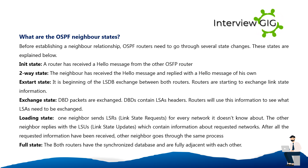In the Exchange state, DBD packets are exchanged. DBDs contain LSA headers, and routers use this information to determine which LSAs need to be exchanged. In the Loading state, one neighbor sends LSRs (Link State Requests) for every network it doesn't know about, and the other neighbor replies with LSUs (Link State Updates) containing information about the requested networks. After all requested information has been received, the other neighbor goes through the same process. In the Full state, both routers have a synchronized database and are fully adjacent with each other.